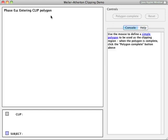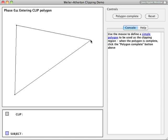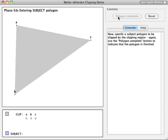We first enter two simple polygons. A simple polygon contains no self-intersections. The polygon is defined by marking vertices on the screen. Click Polygon Complete when all desired points have been specified. We now enter the second polygon in the same way.